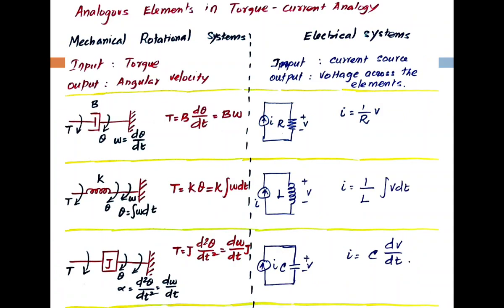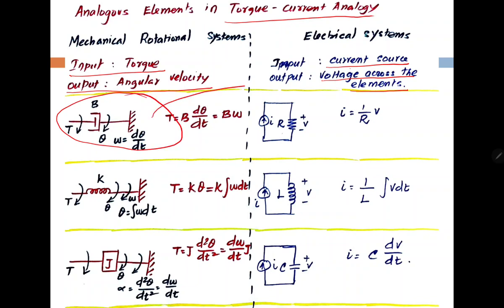At the same time, we need to know the torque-current analogy. In the mechanical rotation system, input is torque and output is angular velocity. In the electrical system, input is a current source and output is voltage across the element. The dashpot is again equivalent to a resistor, and the equation is I equals 1 by R times V, where 1 by R is the conductance.